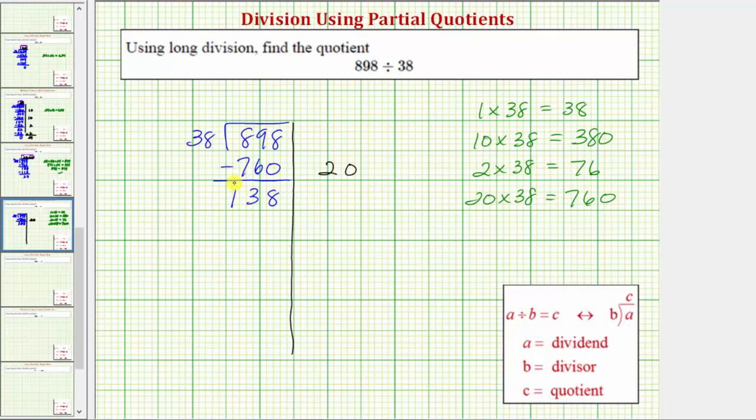And now we repeat the process. We want to determine a certain number of 38s that we know for sure are in 138. Well looking at our products, notice both 38 and 76 are less than 138. So let's use the larger product of 76. Because 76 is less than 138, and 76 equals 2 times 38, we notice at least 2 38s in 138. Let's use 2 as the next partial quotient.